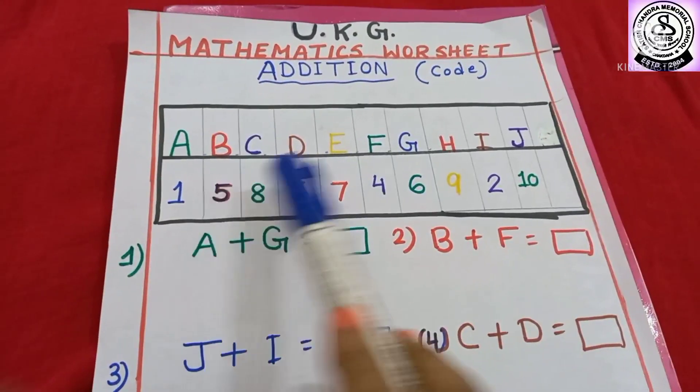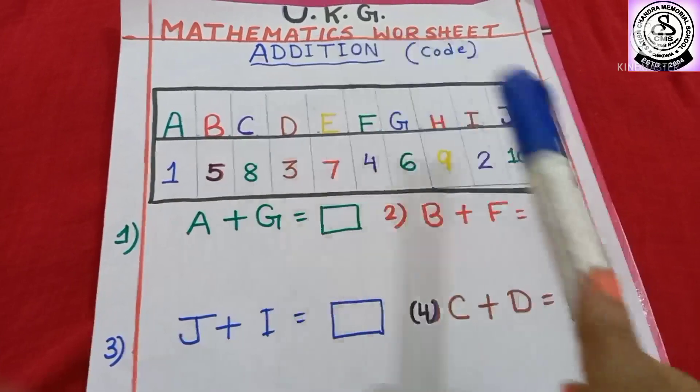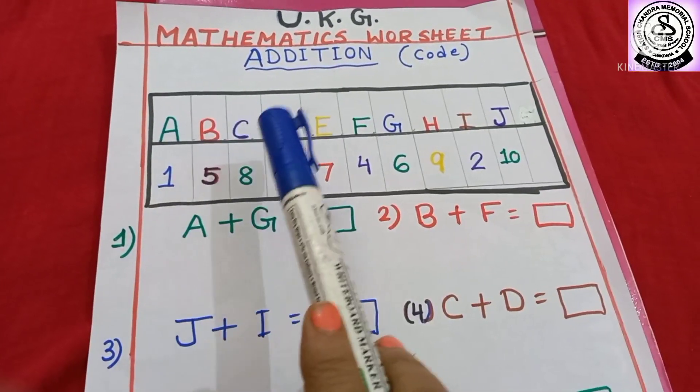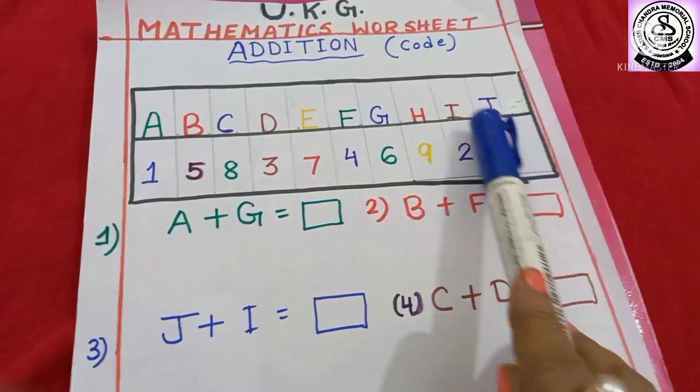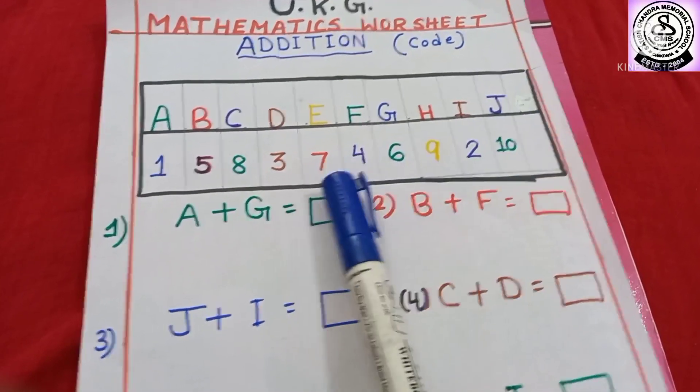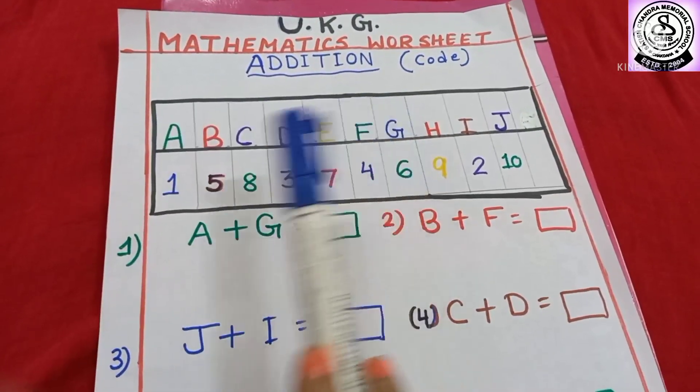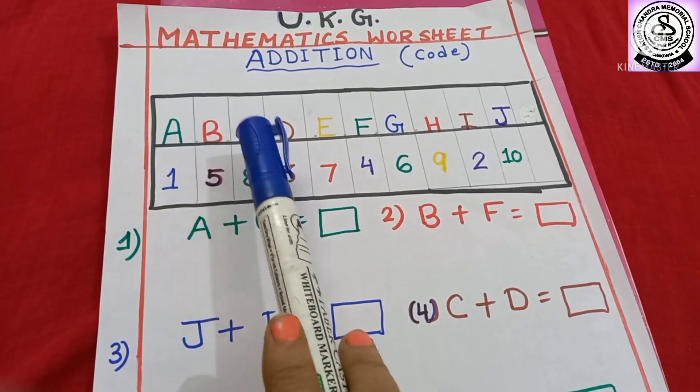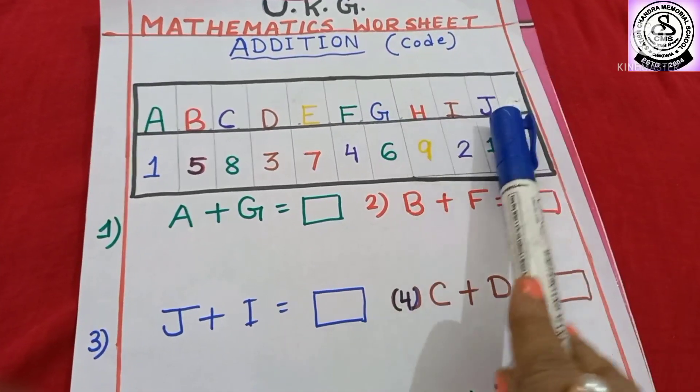Here you can see I have written 10 alphabets from A to J. A, B, C, D, E, F, G, H, I, J. How many alphabets are there? Can you tell me? Okay, let us count together. 1, 2, 3, 4, 5, 6, 7, 8, 9 and 10.